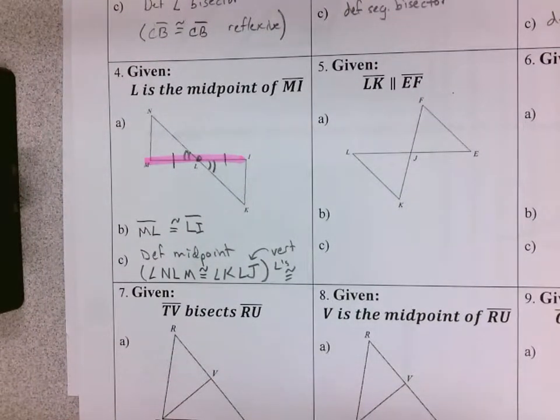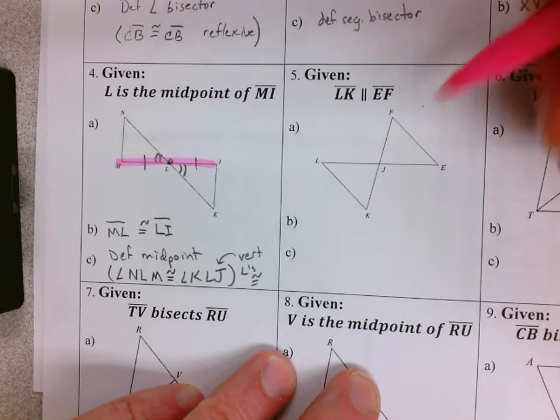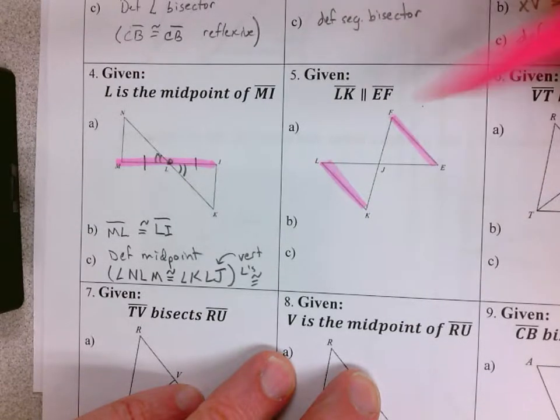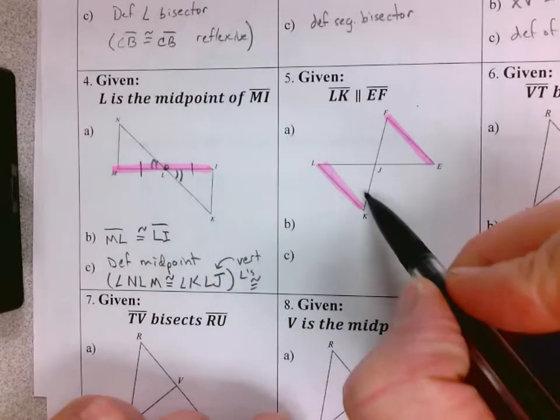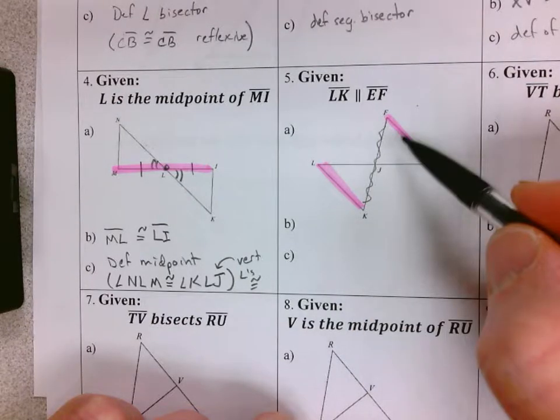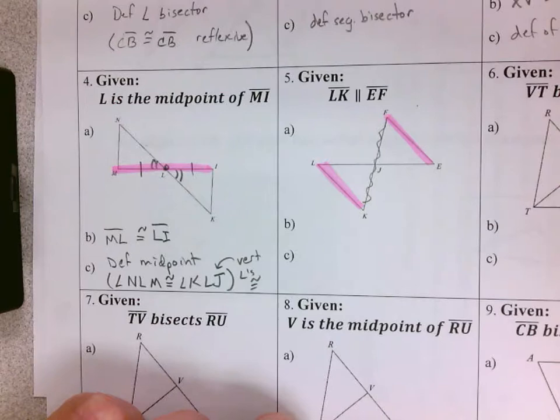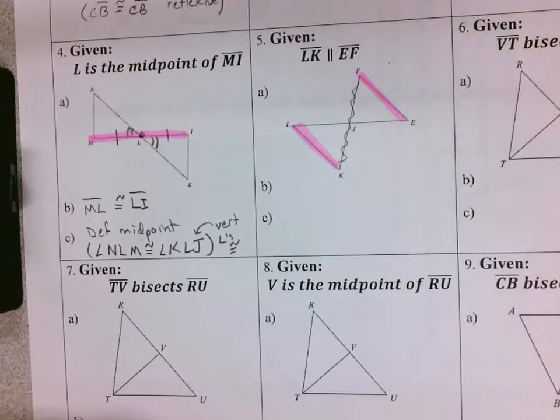LK is parallel to EF. So there's LK, there's EF. And when I have parallel lines, I'm thinking of my special angles. One direction would be if this was the transversal, and so we have the Z right here, which means alternate interior angles congruent.